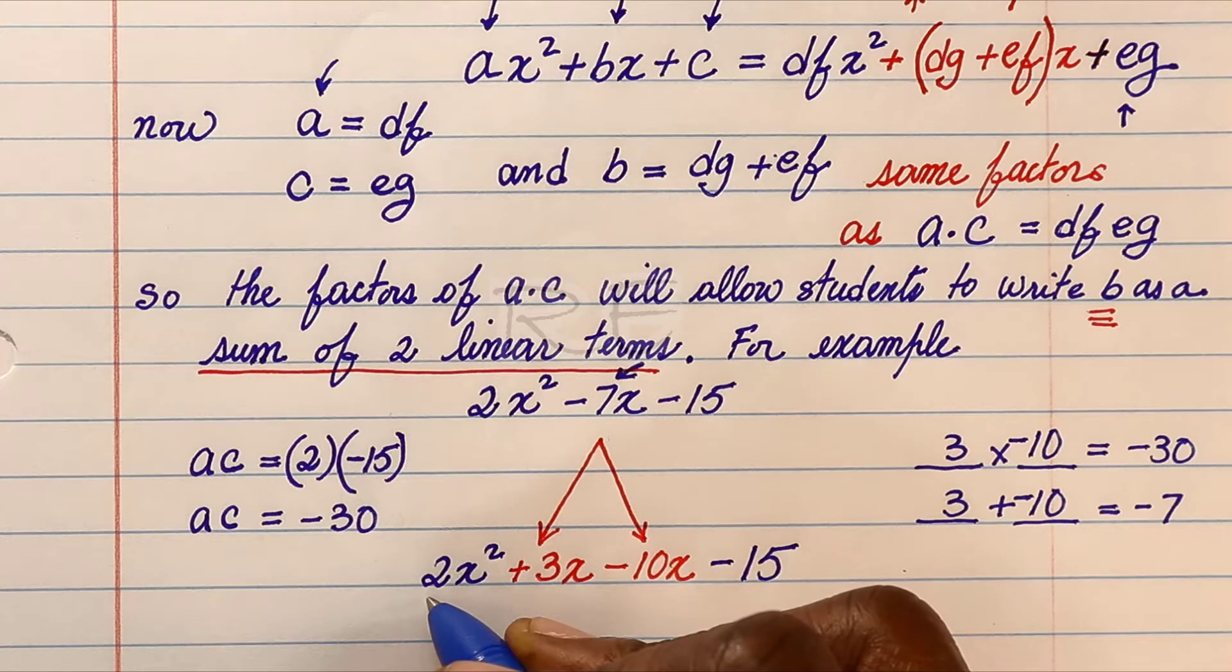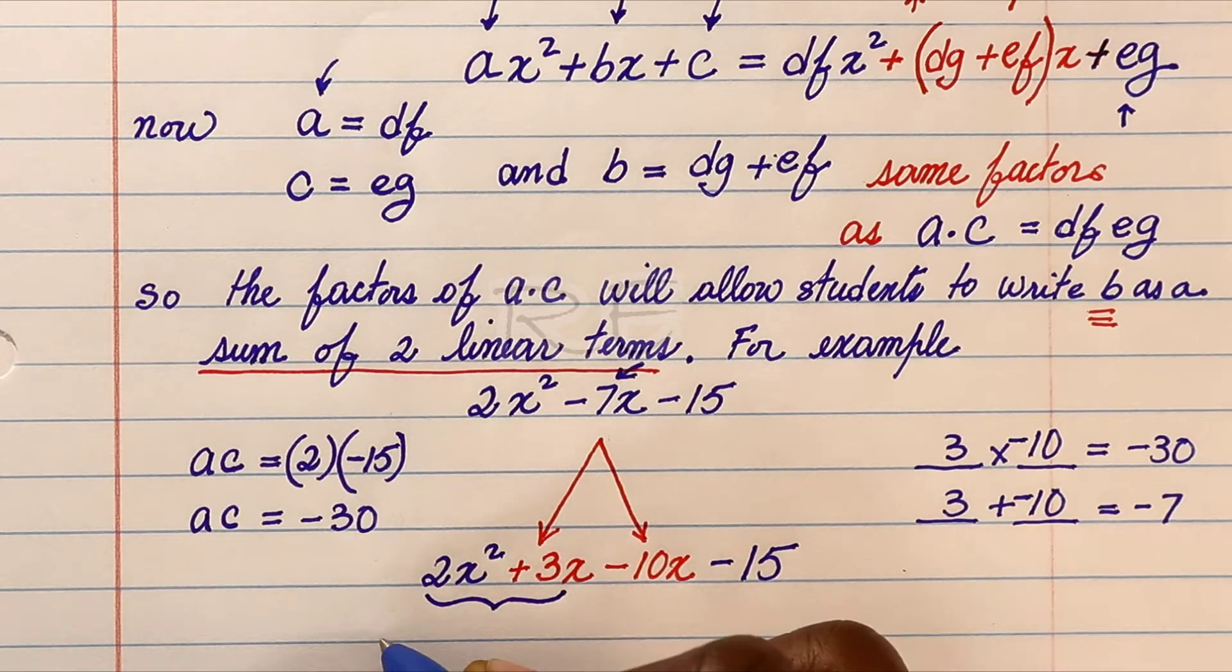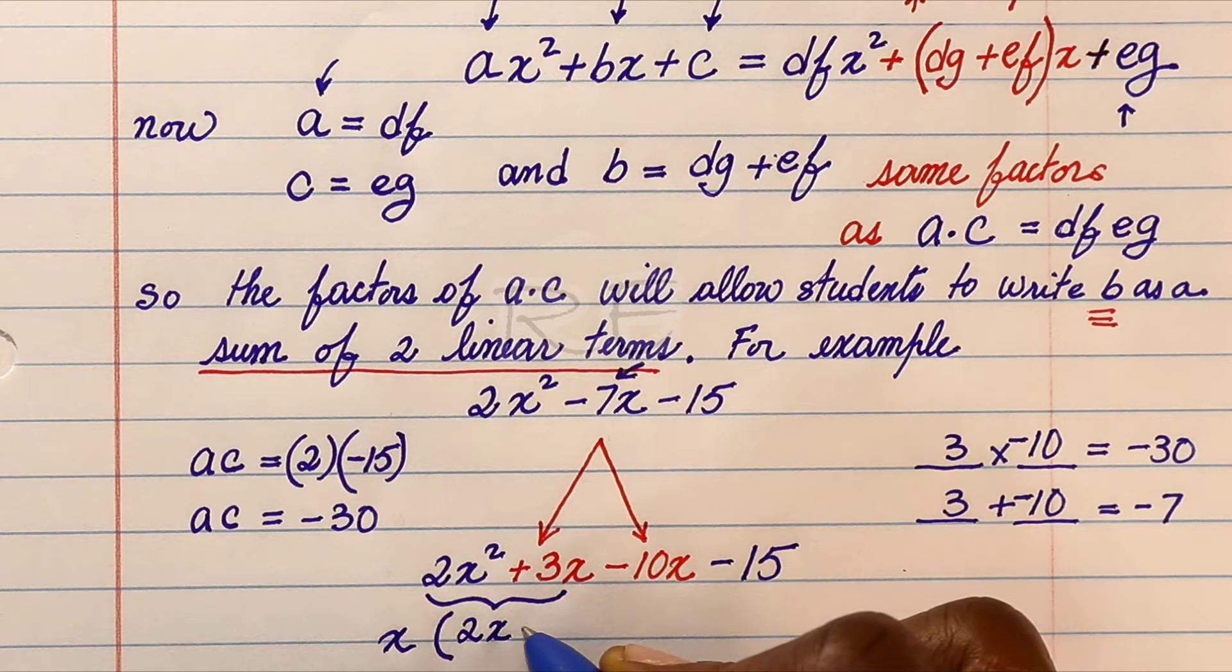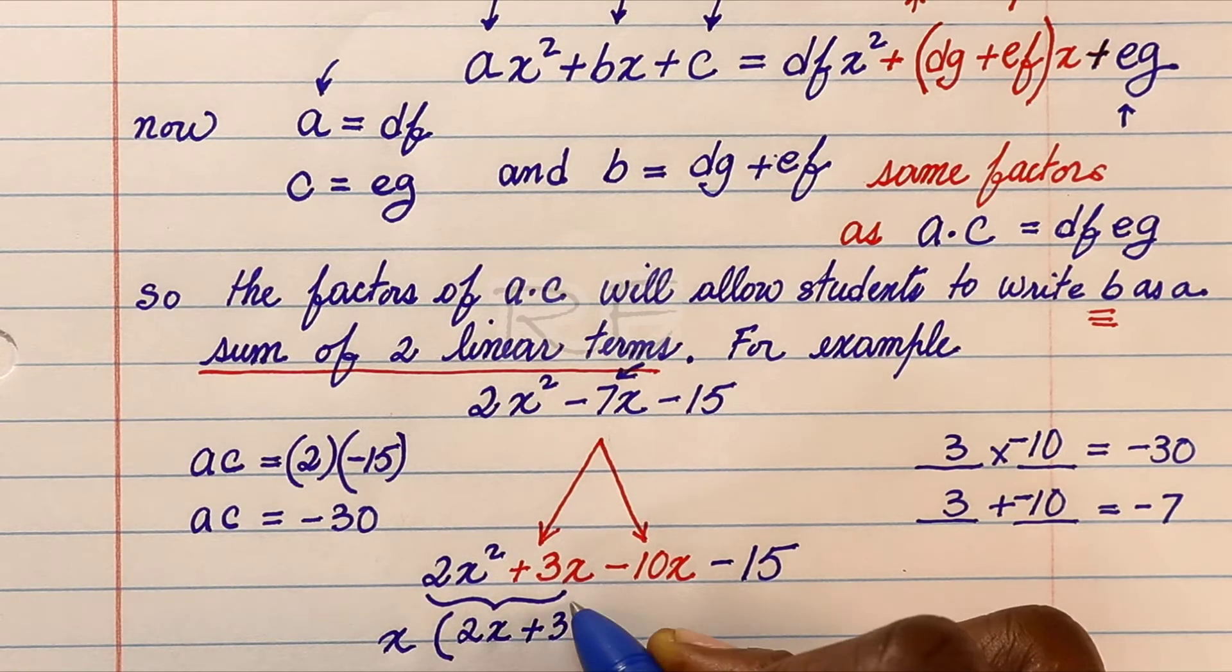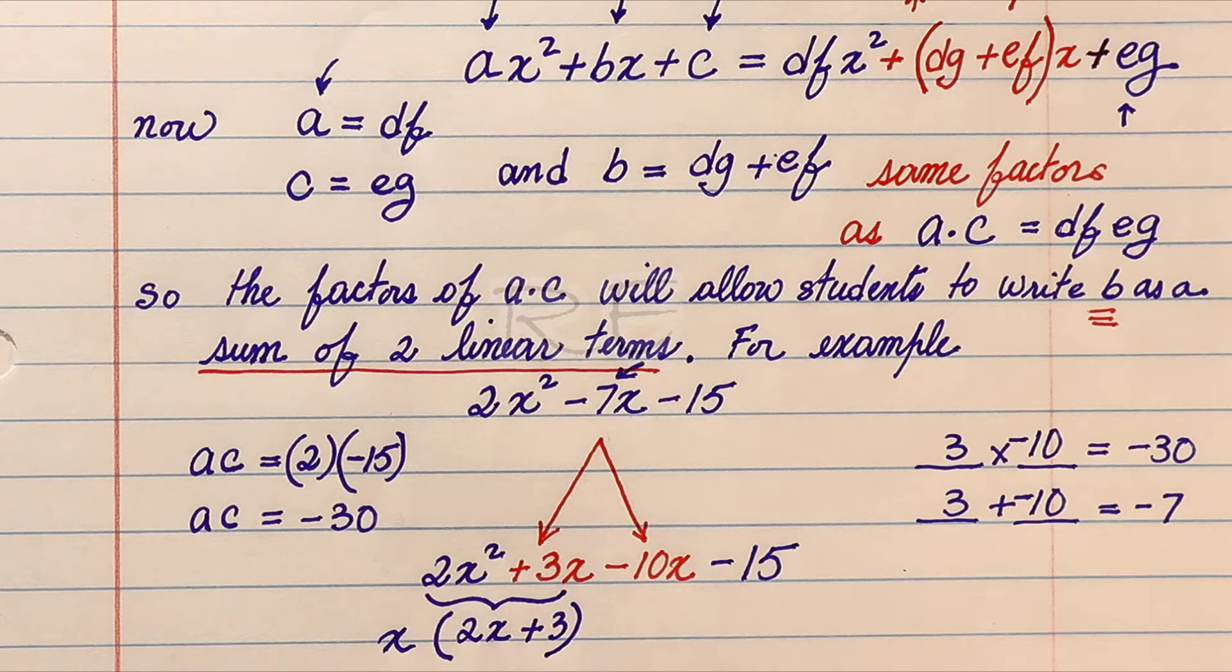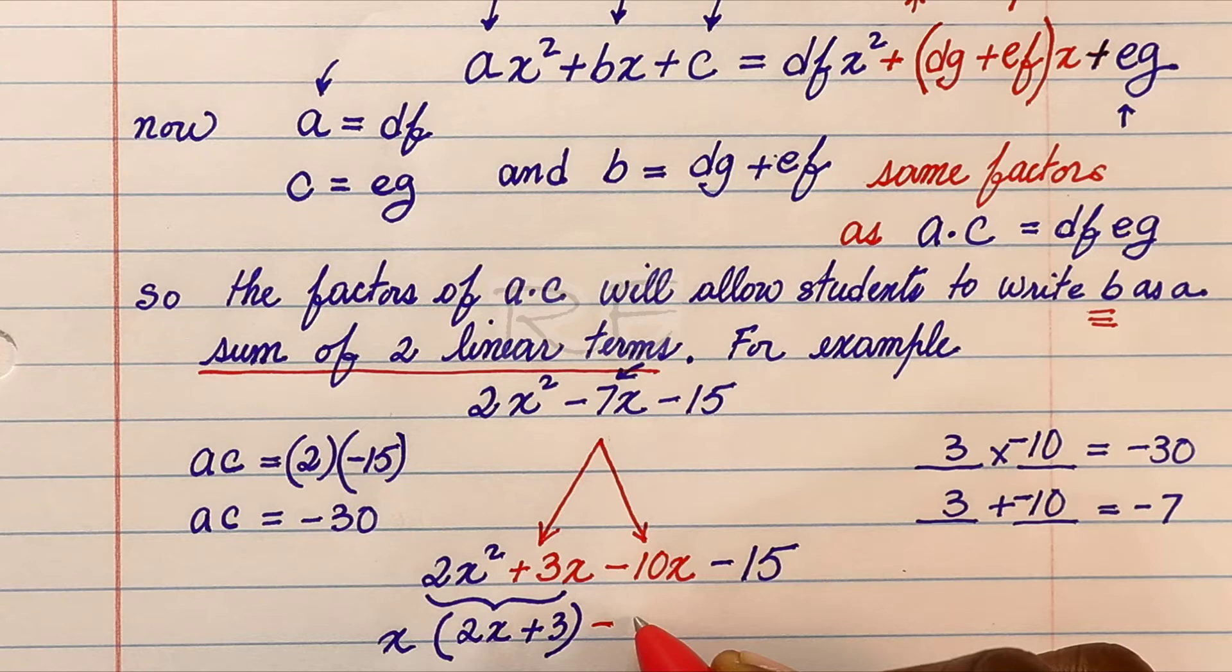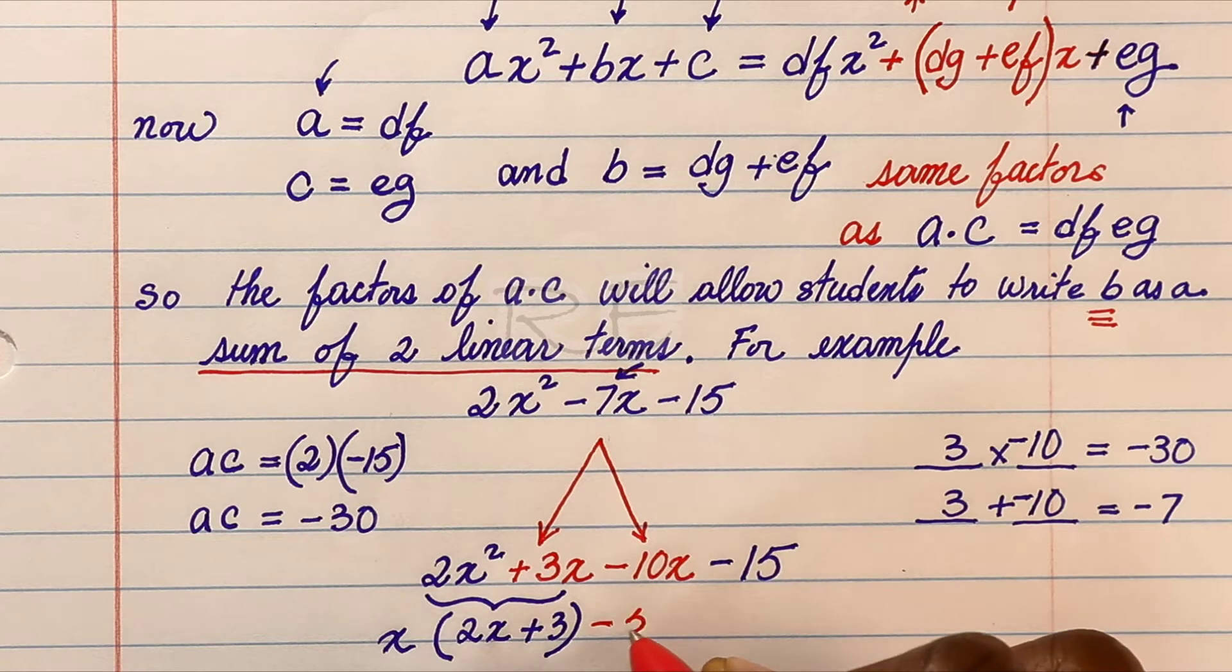Now we're going to do factoring by grouping. The greatest common factor between 2x squared and 3x is x, and we have x times 2x plus 3.